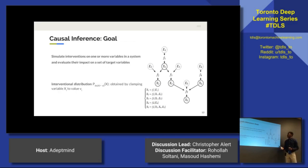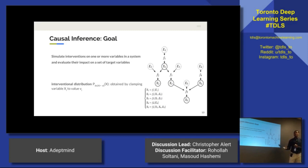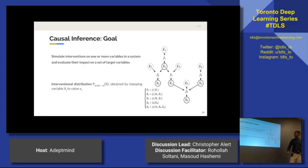The goal is really to learn an interventional distribution. That is, if I were to take X1 — for example, the price of cigarettes — and fix it to some value as a policy maker, what would change in the other variables I'm interested in? For example, the number of lung cancer cases in Toronto or the number of smokers.